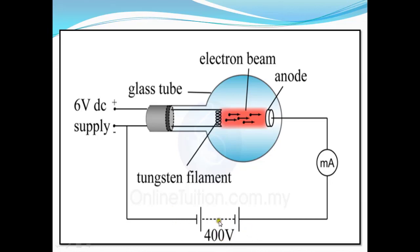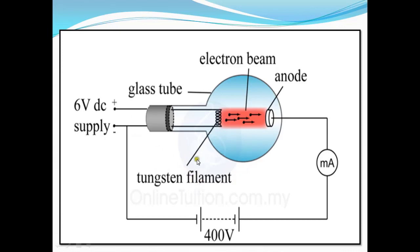In another diagram, a high voltage current flows from the emitter here — this is the anode, this is the electron beam, and another 6-volt DC supply is attached here. This is the filament, also called the tungsten filament, and this is the glass tube. The 6-volt battery heats the filament, causing movement of electrons. When the filament is heated it glows, and thermionic emission occurs in the electron beam setup.